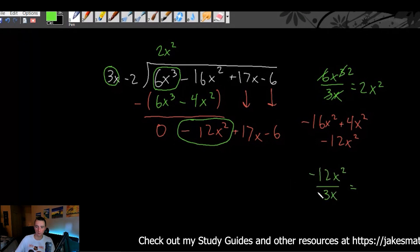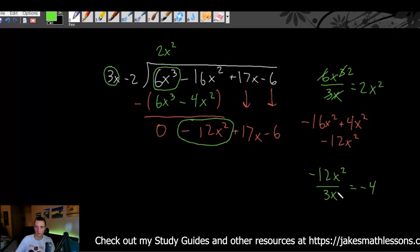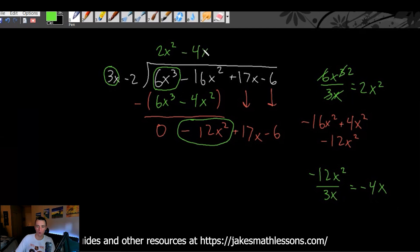Well, it's going to be negative 12 divided by 3 is negative 4. And then x squared divided by x is just x. So negative 4x. So we'll write negative 4x.